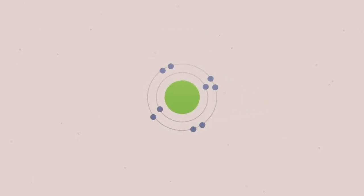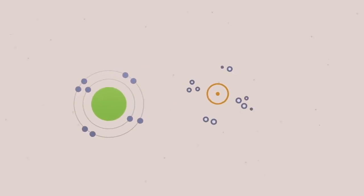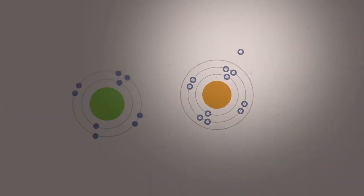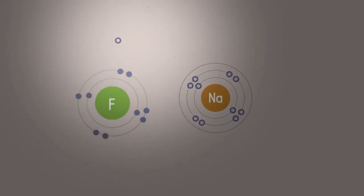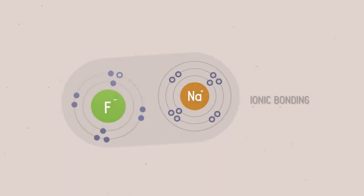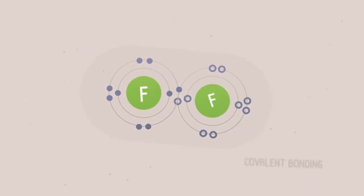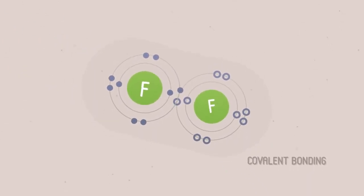Atoms bond by swapping or sharing electrons in their outer shells. When very different atoms react, like metals and nonmetals, they normally swap electrons. This is ionic bonding. But when similar atoms react, like nonmetals combining with other nonmetals, they share electrons. This is covalent bonding.